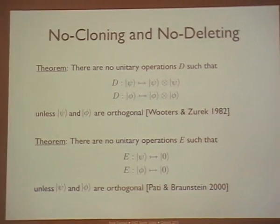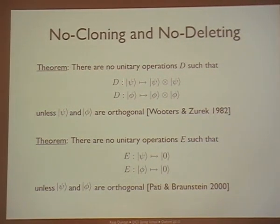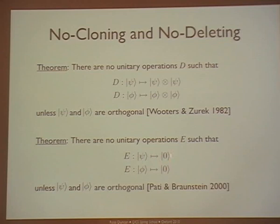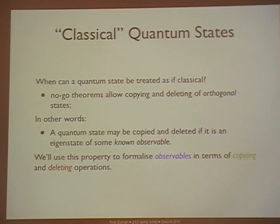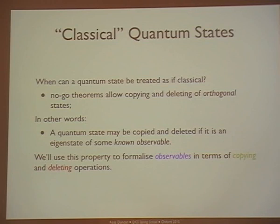Remember the no-cloning and no-deleting theorems: if you have a unitary operation, you can't duplicate two different quantum states unless they are orthogonal. Likewise, you can't erase quantum states unless they are orthogonal. One way of understanding quantum states can't be copied is: if I promise you that my quantum state is an eigenstate of some observable, I can copy it. So if I know what observable it belongs to, I can in fact treat it as classical data. We're going to formalize quantum observables in terms of these copying and deleting operations.